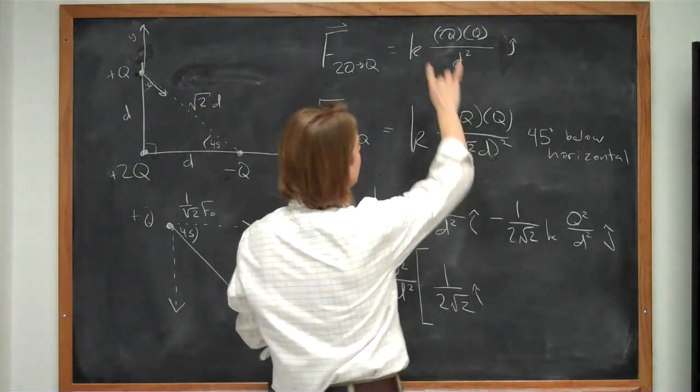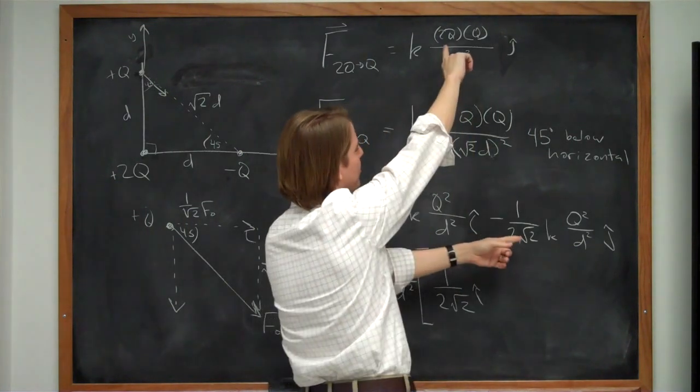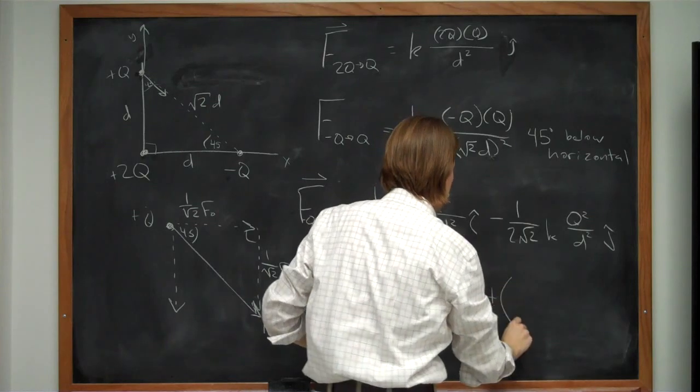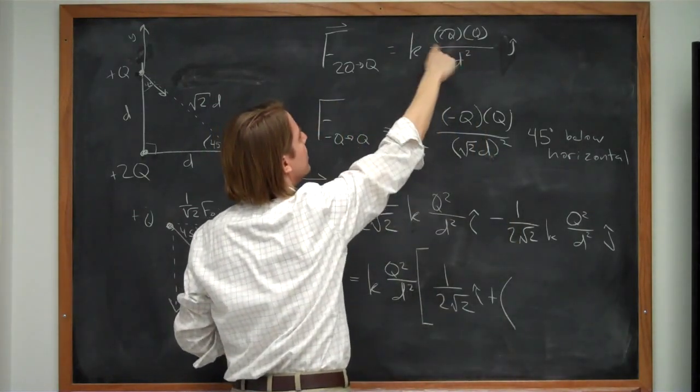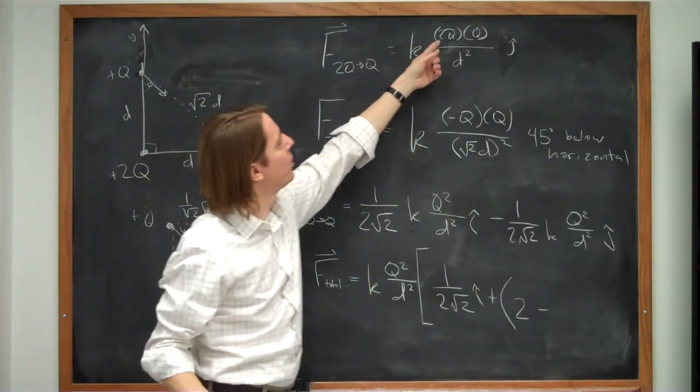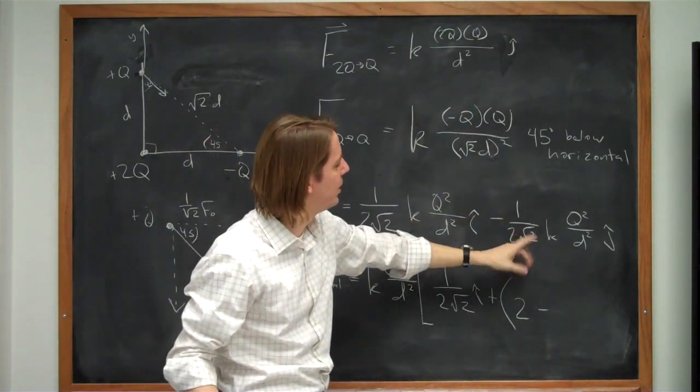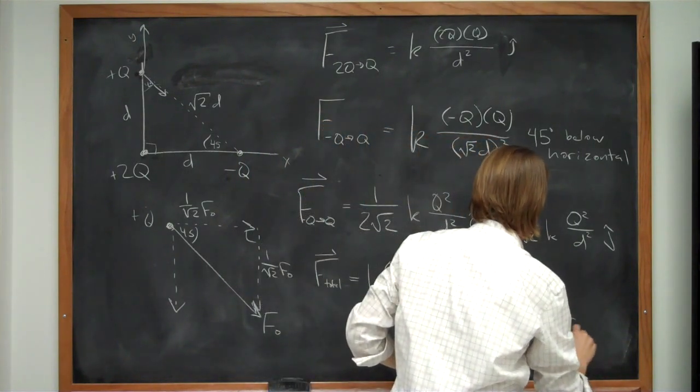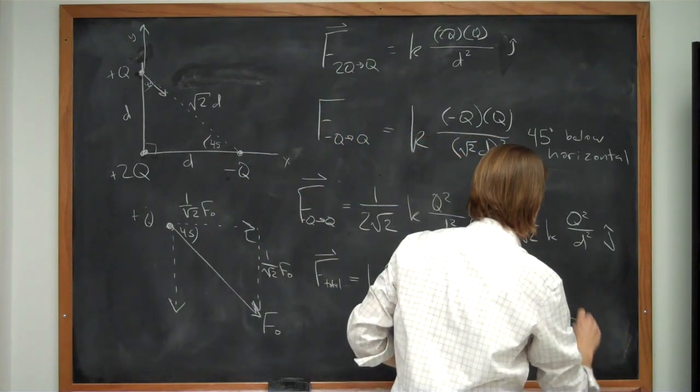And then what's left is two terms make up the j direction. So let's see. Once we pull everything out. We got kq squared over d squared. We're left with a 2. For that part. The 2 is all that's left. And for this part. The 1 over 2 square root of 2 is all that's left. That's 1 over 2 square root of 2.